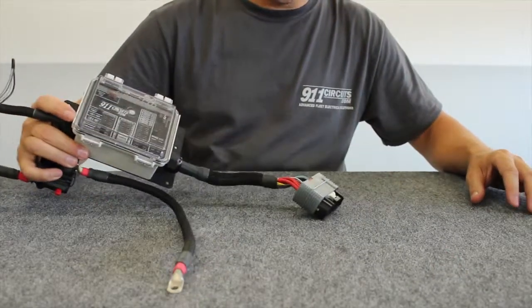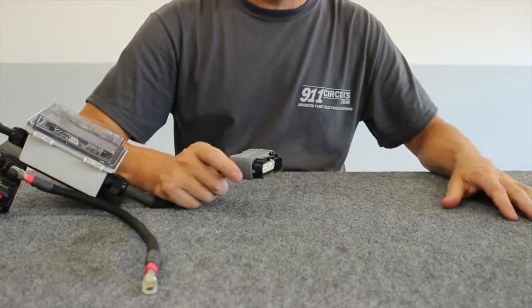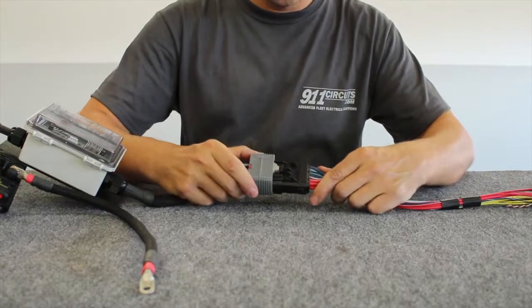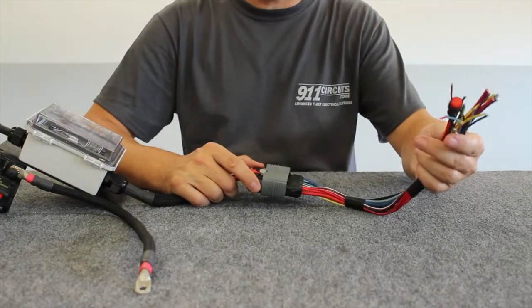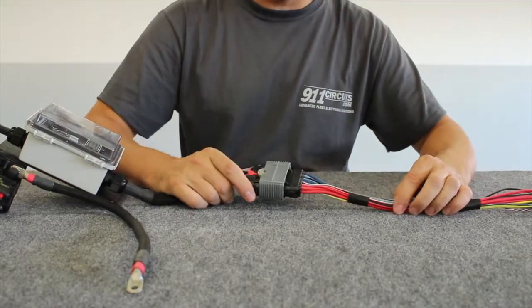So what we haven't talked about yet is the output of the system. And this is a CamLock waterproof connector, 15 circuits output, and just plugs in and locks. From there, you have your 15 outputs, all individually fused. All your wires are labeled every three inches.